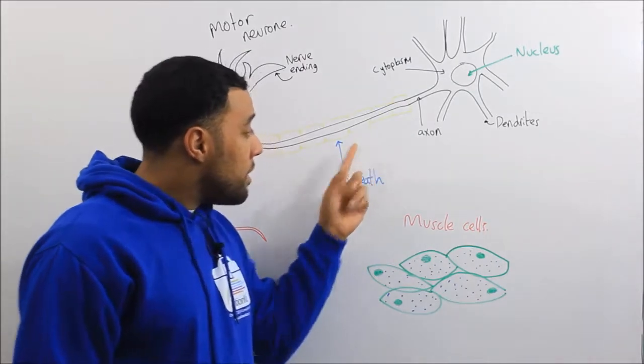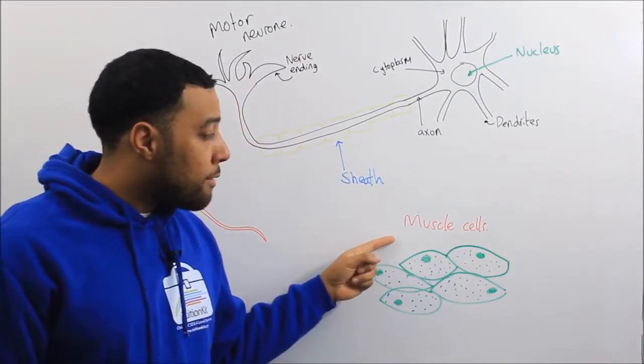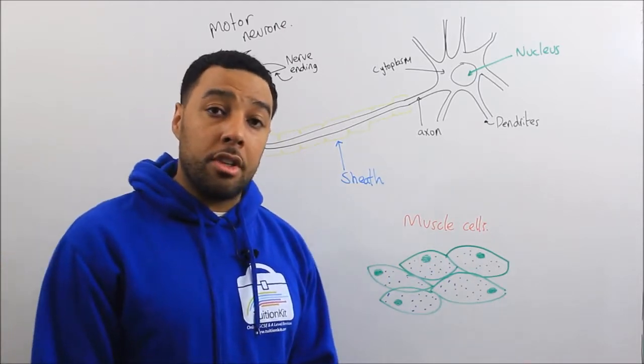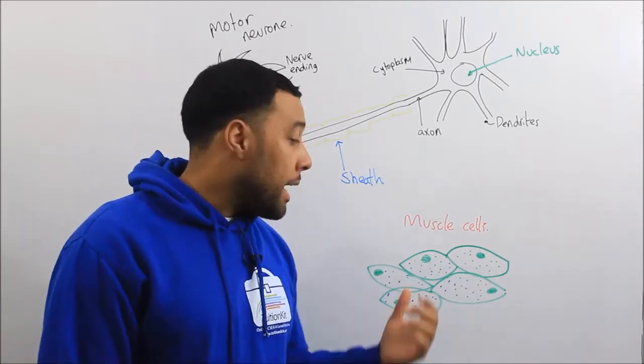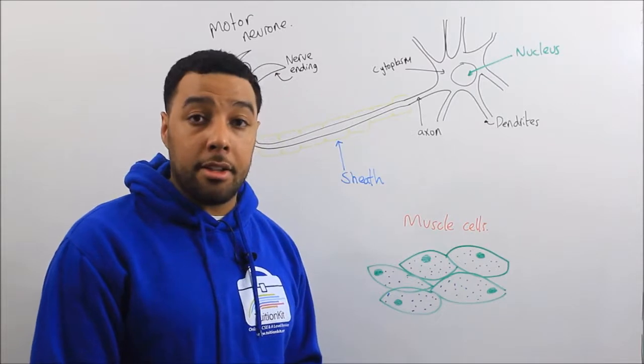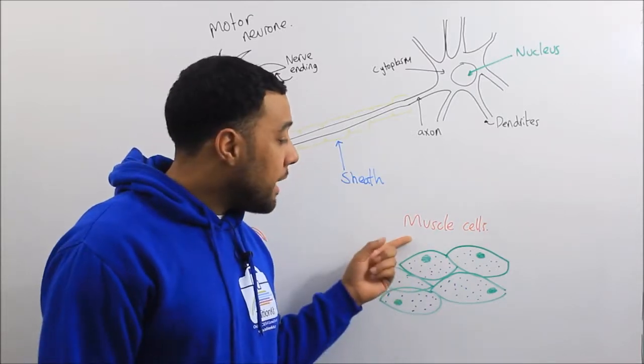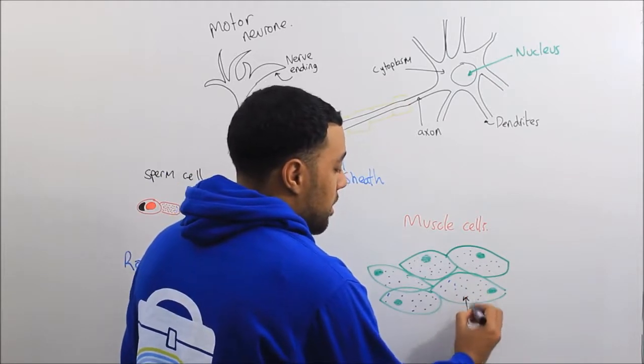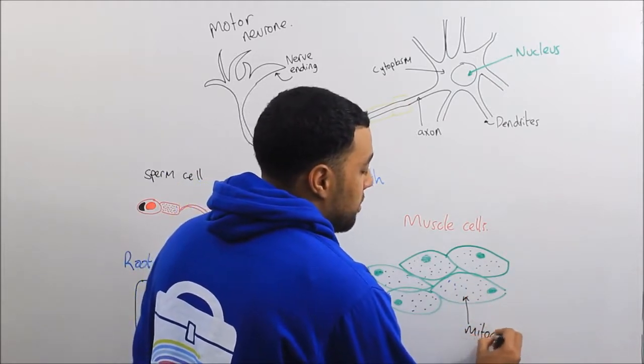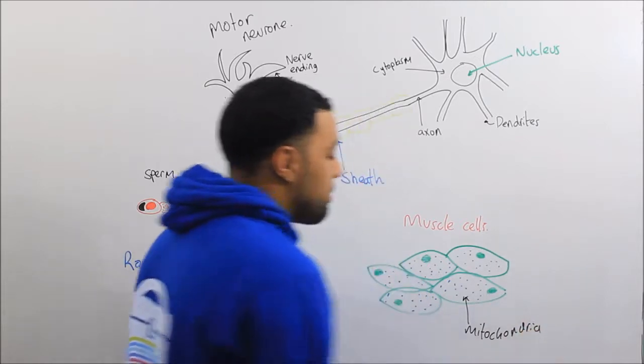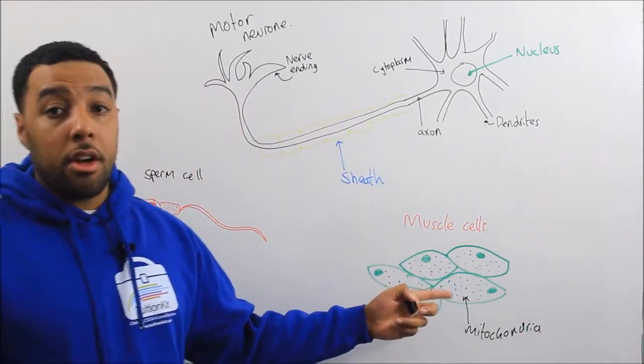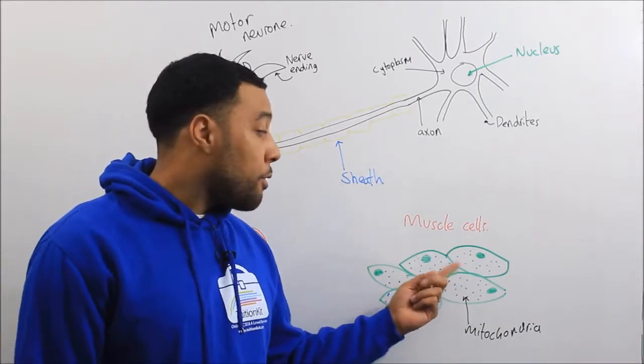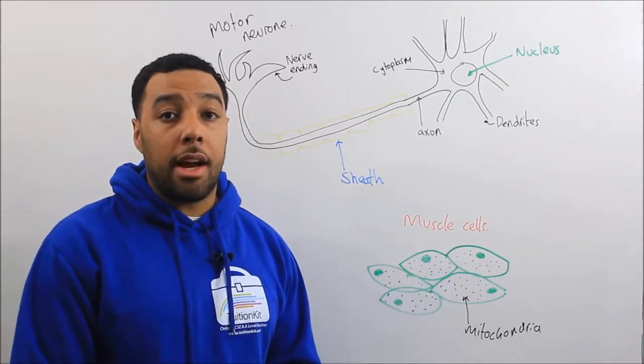Below the motor neuron we also have muscle cells. The muscle cell function is to allow us to move by contracting and relaxing. The adaptation of the muscle cell is that it contains mitochondria. You can see it is packed full of mitochondria. This releases energy for the muscles to contract and relax.